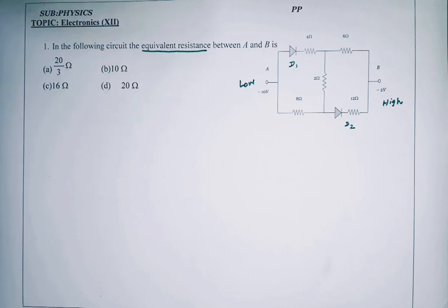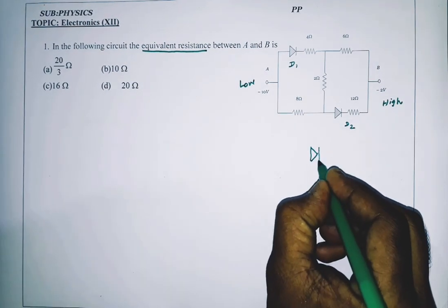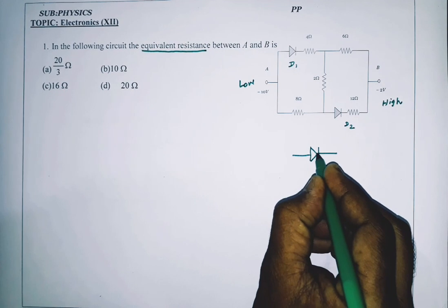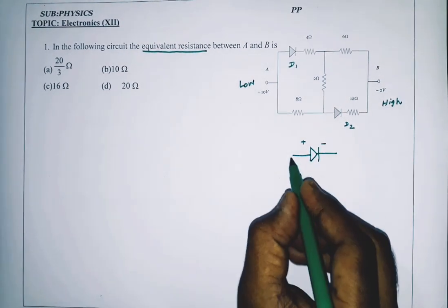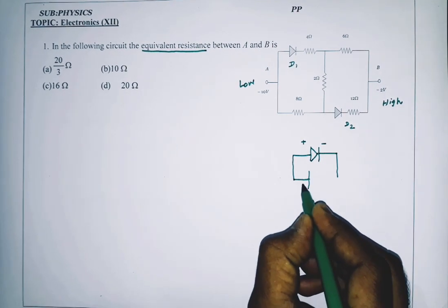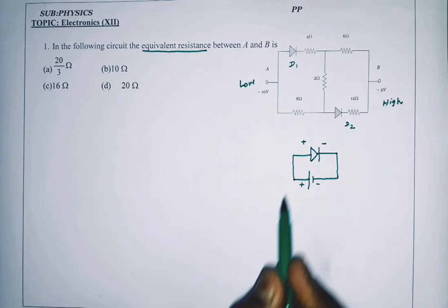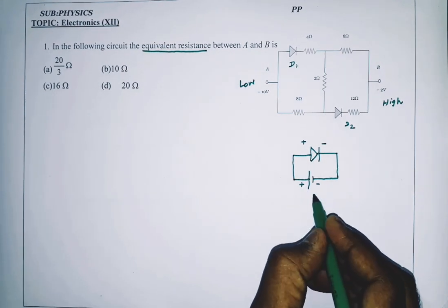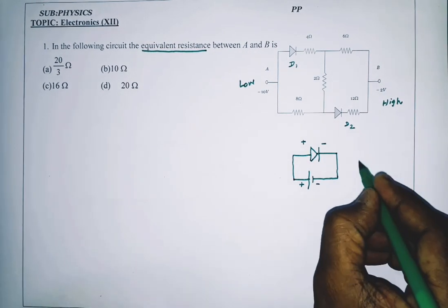In the circuit there are diodes — forward bias and reverse bias. The diode symbol has a positive and negative terminal. In the circuit, if the battery positive connects to the diode positive, and battery negative connects to the diode negative, this is forward bias.